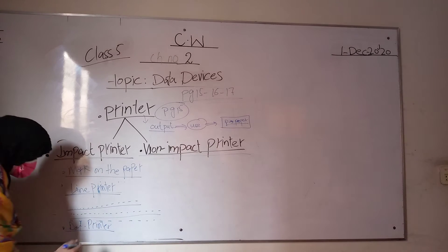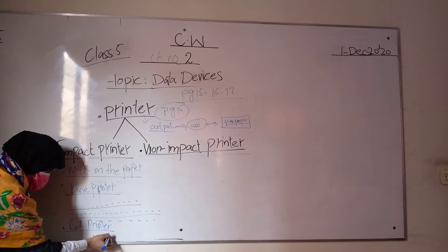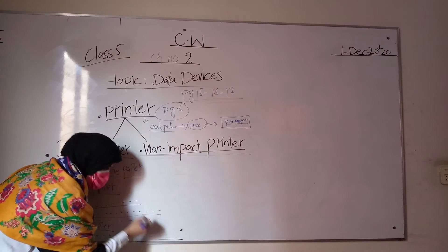With dot matrix printers, printing is done using dots: 1 dot, 2 dots, 3 dots, 4 dots, 5 dots, 6 dots to form characters.